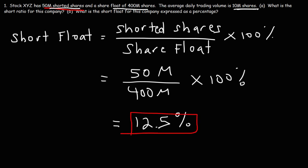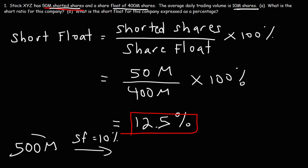The short float tells us what percentage of the available shares — the shares available for trading — have been shorted. For example, if we have a share float of 500 million shares and a short float of 10%, then 10% of 500 million would be 50 million shorted shares. So the short float tells us what fraction of the shares available for trading have been shorted.